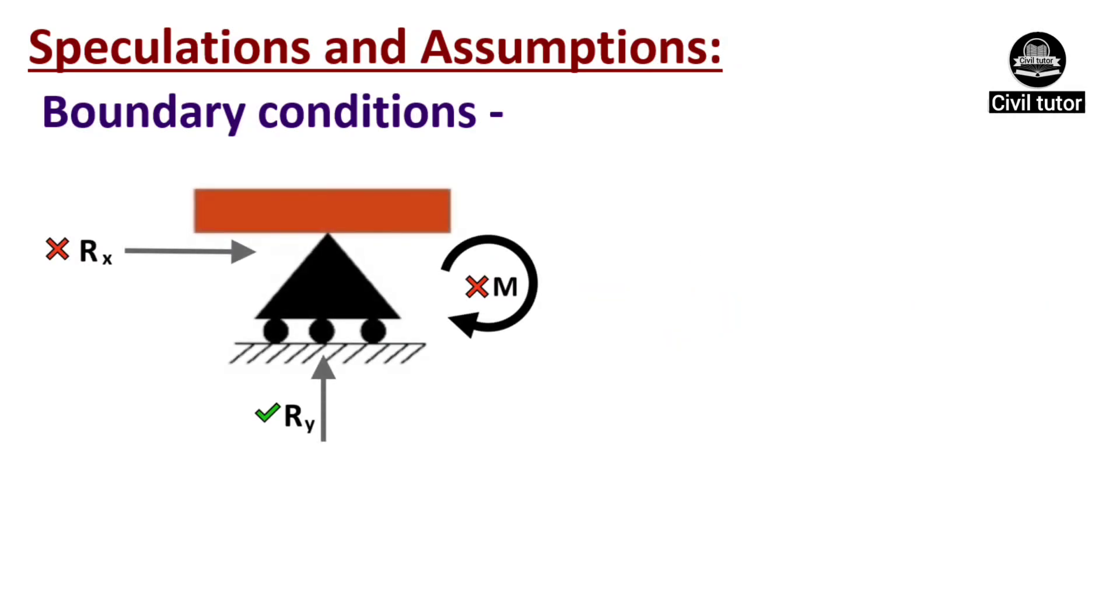The member having a roller support is allowed to move along the support and can rotate freely. That's why there is no reaction along the horizontal axis of the support, that is along the x-axis, and the resisting moment is zero. In other words, there will be a reaction only in the direction normal to the support. Hence roller supports can develop only vertical reactions.